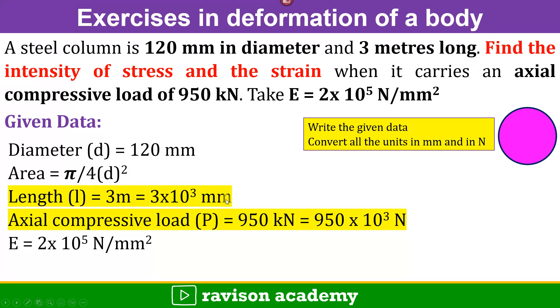Convert it into millimeter and axial compressive load P is given 950 kN. Convert this kN into newton, 950 into 10 raise to 3 newton, and Young's modulus value can be taken as directly.